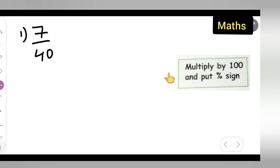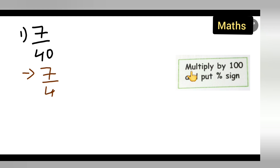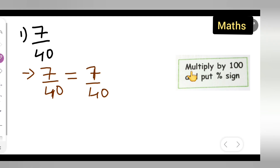Let me start. What is given over here? First, write down 7 upon 40. Now, what is the rule when we are converting a fraction into a percentage? We multiply by 100 and put a percentage sign.